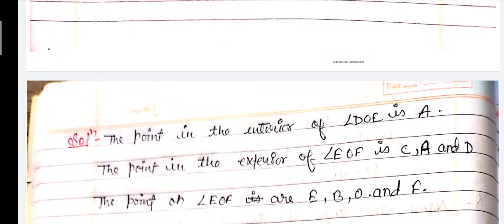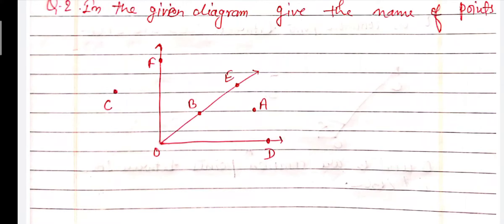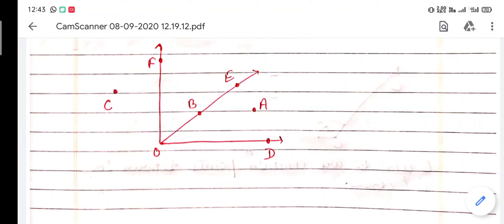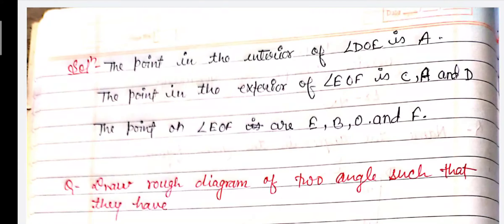Here we have to find the points which lie in the exterior of angle EOF. The angle EOF is formed by rays OE and OF. The points D, A, and C are outside of angle EOF, so D, A, and C are the exterior points of angle EOF. We write: the points in the exterior of angle EOF are C, A, and D. In the figure, points E, B, O, and F lie on the arms of angle EOF.